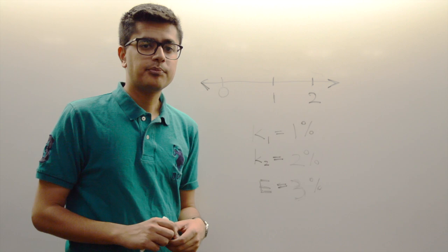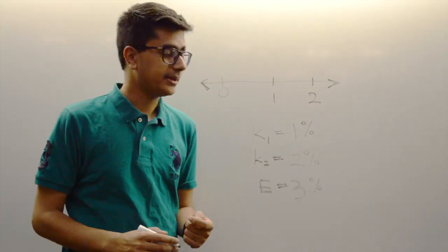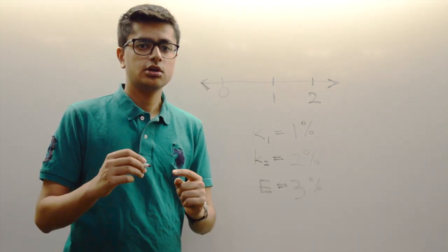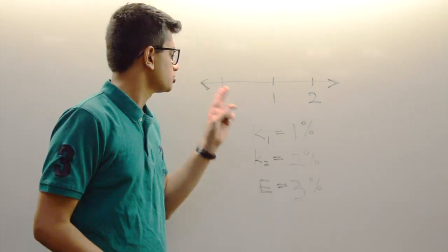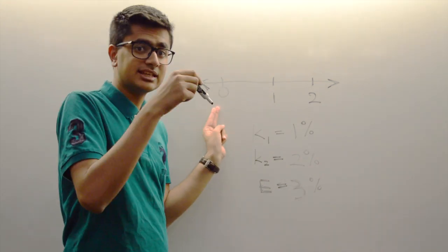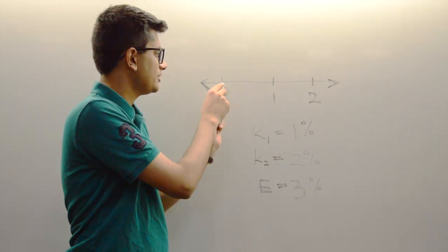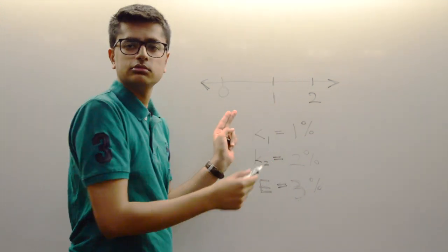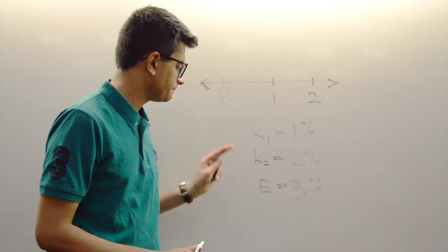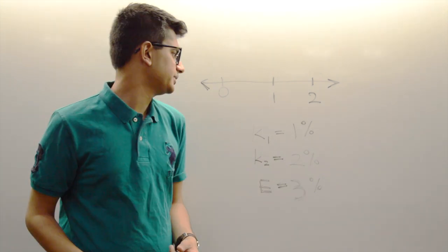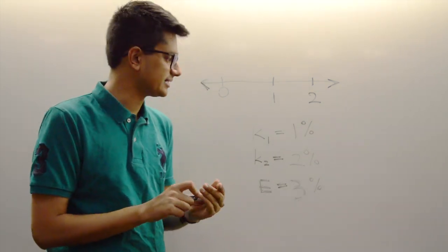K2 represents the two-year spot rate, meaning the interest rate that you can earn for two years exactly starting from today. So if you have a two-year spot rate today of 2%, that means you can earn 2% for two years. E over here is what I'll explain in a minute when I get started with my example.